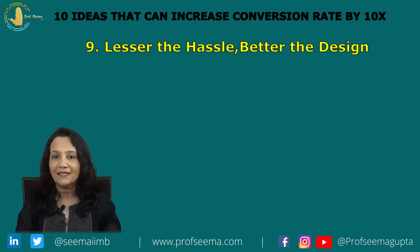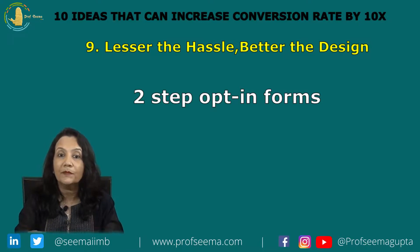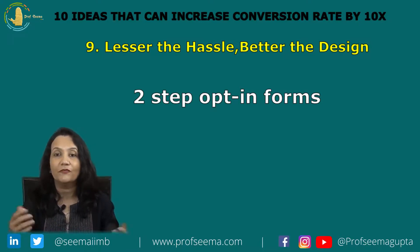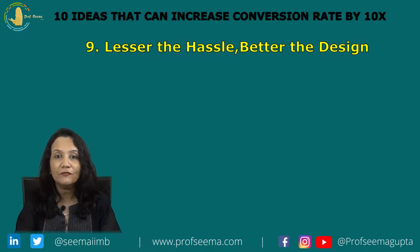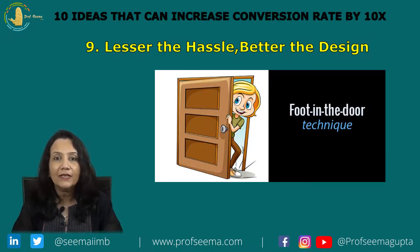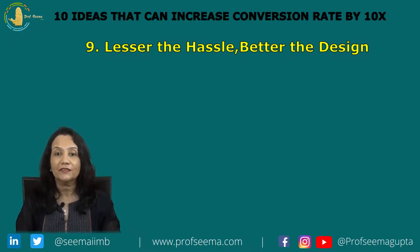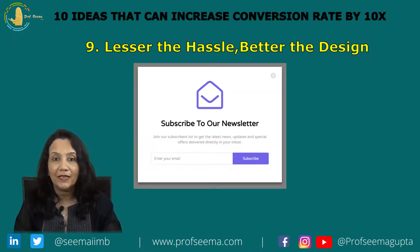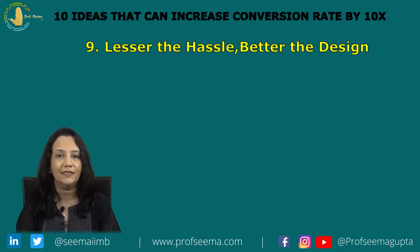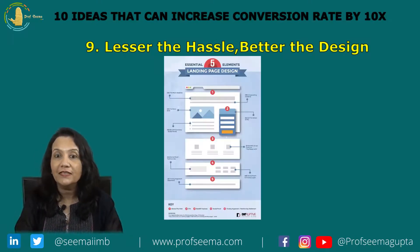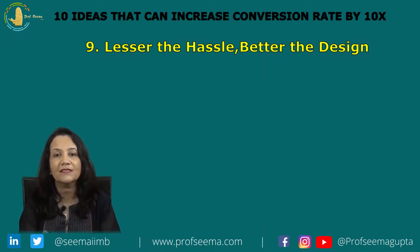Ninth tip: lesser the hassle, better the design. Two-step opt-in forms serve as the sweet spot for visitors. This is based on the foot-in-the-door phenomenon, where visitors are more likely to complete a long process of conversion if it is broken into small components. You could get your customers to subscribe to your newsletter by first having them click through your CTA, then fill out the form and opt-in. Each of the two CTAs leads to a different lead form based on thorough customer review.